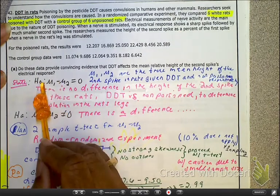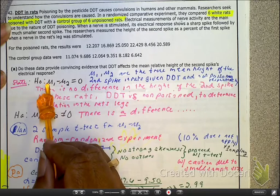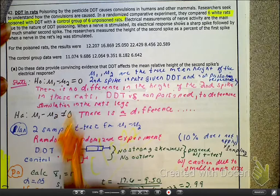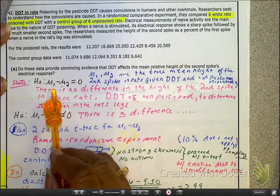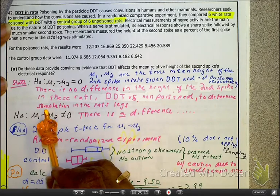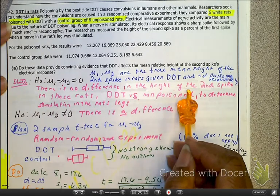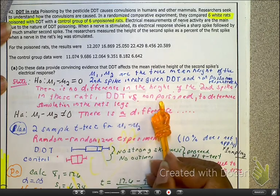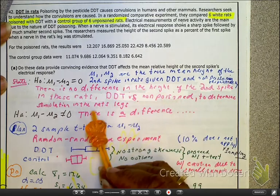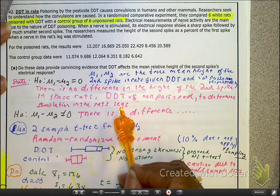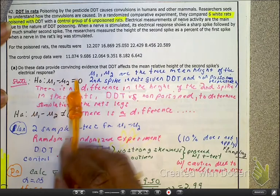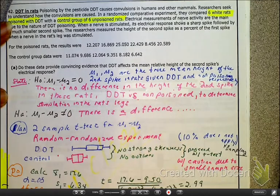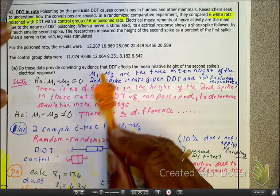So here, our HA, H0, excuse me, is that μ₁ minus μ₂ equals 0, so there is no difference. Remember I told you this was coming, so let's do it. We're going to write what this represents in words. There is no difference in the height of the second spike in the rats, DDT versus non-poisoned, to determine stimulation in the rats' legs. That's what your H0 is. HA is there is a difference. And then we're putting dot, dot, dot, because nobody's got time for that.